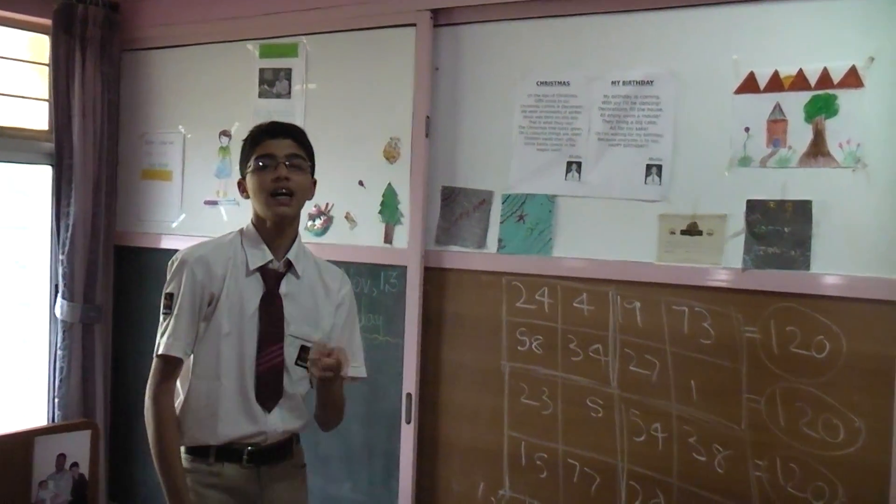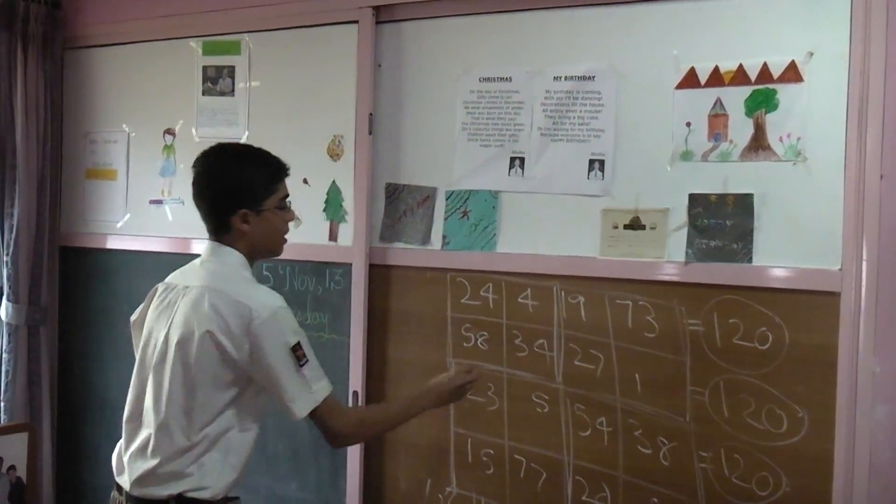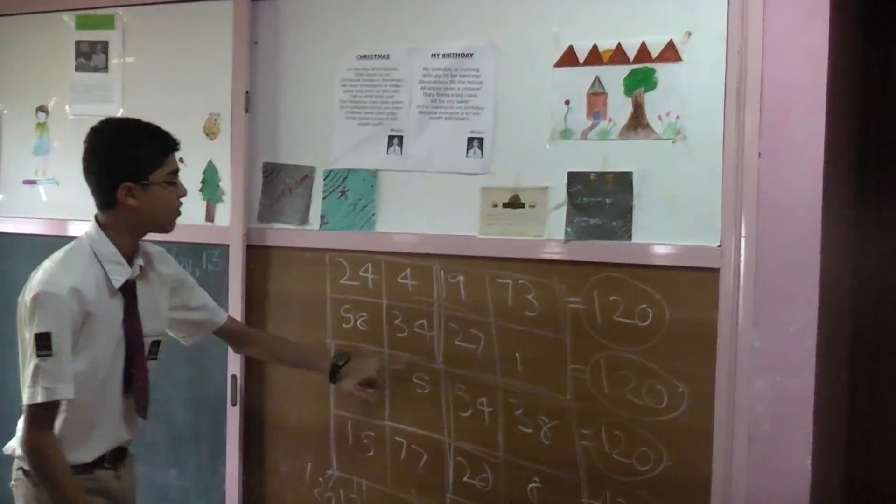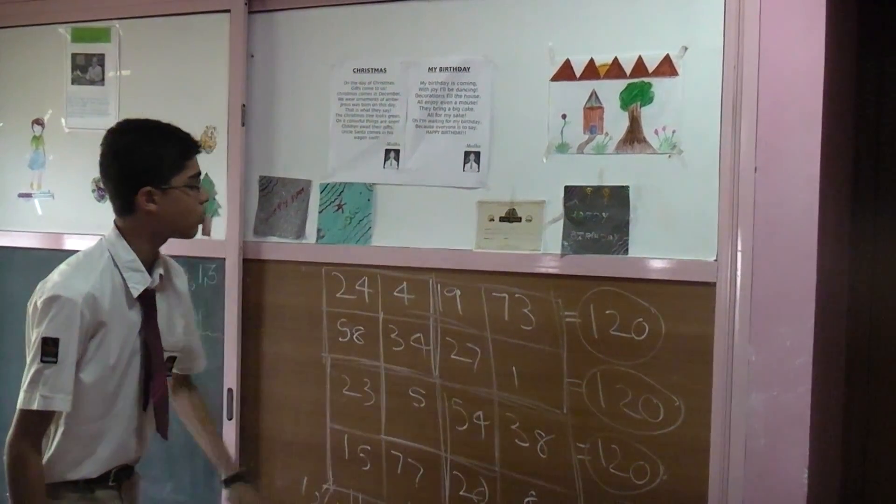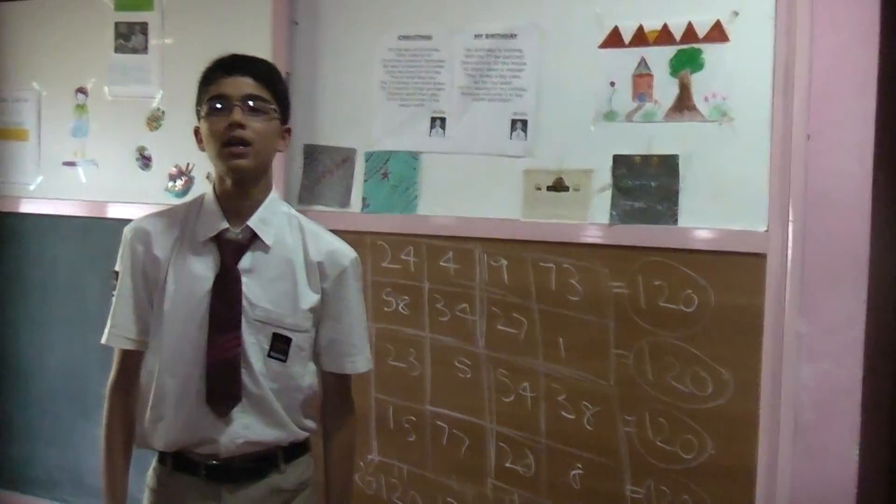But, Tendulkar was one of the youngest ever players to play for the Indian team. So, we need to give something more to him. Look at these four numbers in the center. You add them together. What do you get? 34 plus 5 is 39, 39 plus 27 is 66, plus 54 is also 120.